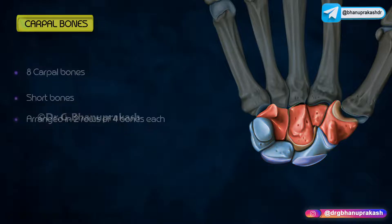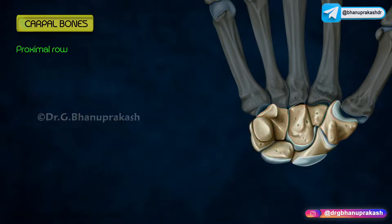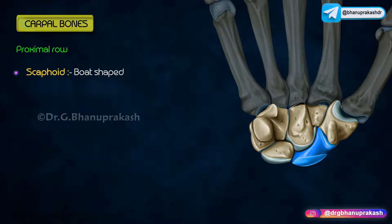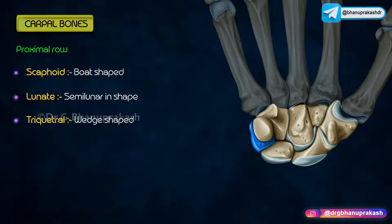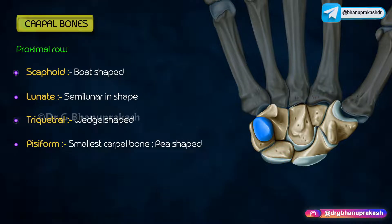From lateral to medial, the proximal row consists of: scaphoid, which is boat-shaped; lunate, which is semilunar in shape; triquetral, which is wedge-shaped; and pisiform, which is the smallest of the bones and is pea-shaped.